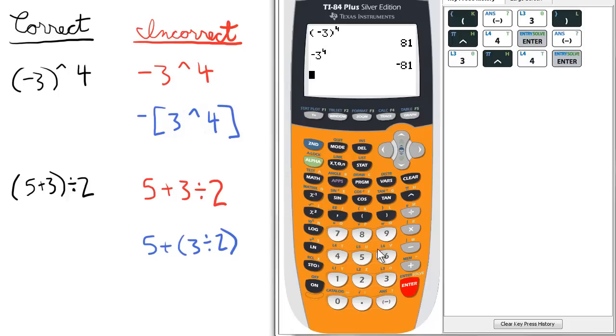Next example of something that could go wrong, let's do it correctly. Enclose 5 plus 3 in parentheses. Open parentheses, 5 plus 3, close parentheses. Then, divide it by 2. Enter.